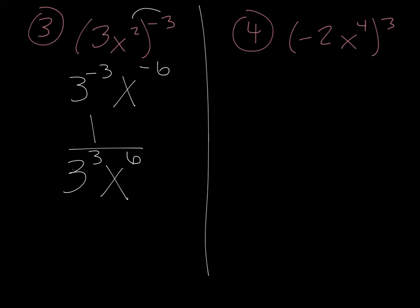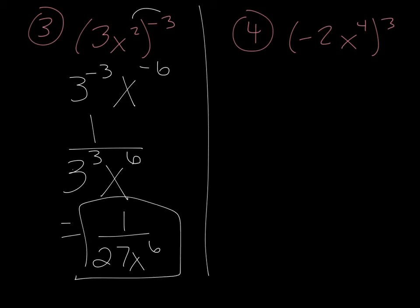Remember, when you have a number to an exponent you have to actually calculate it. 3 to the third is 3 times 3 times 3, which is 27. So the answer is 1 over 27x to the sixth.